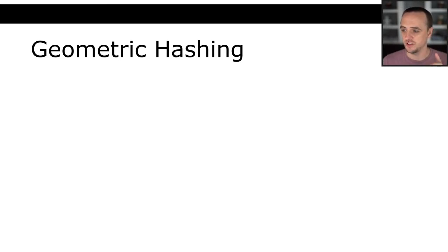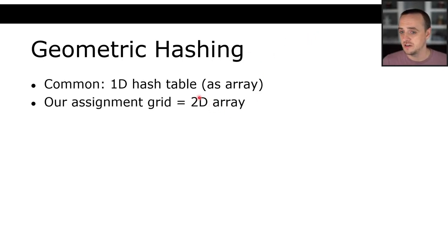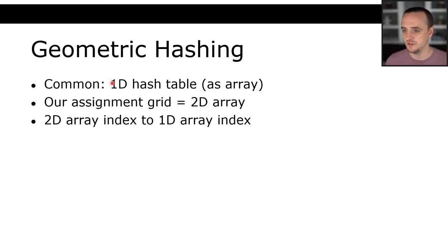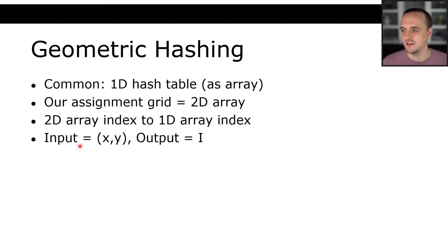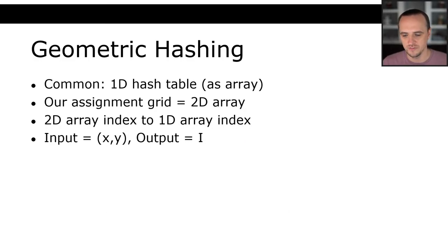Now let's talk about geometric hashing, which you might actually use in assignment two if you want to optimize. Our assignment has a 2D array grid, and we want to store our closed list as a one-dimensional array, associating each bin of that 1D array with a value from the 2D array. That means we're hashing a two-dimensional XY array index into a one-dimensional array index. If we have an input XY representing a state in our environment and the output is just an integer, let's walk through the example.